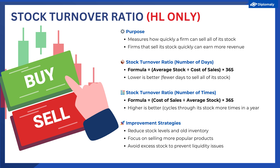The other method is the number of times, or how many times in a year a firm sells all of its stock. This is calculated by cost of sales divided by average stock. The higher this number, the better for the business. To improve this ratio, the firm can consider various strategies that can help them lower the amount of stock that they hold, which can also help lower costs.